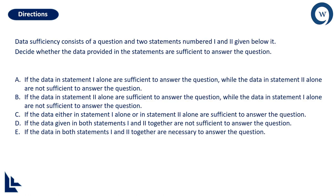Pick C as the answer if either statement 1 alone or statement 2 alone are independently sufficient to answer the question — that is the key difference, independently. Pick D if the data given in both statements 1 and 2 together are not sufficient to answer the question. Pick E if the data in both statements 1 and 2 together are necessary to answer the question.